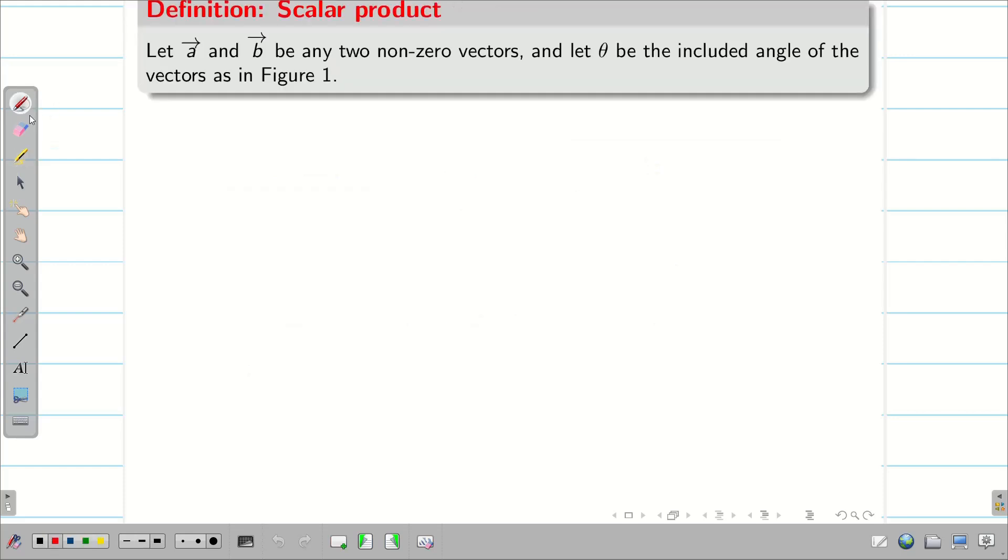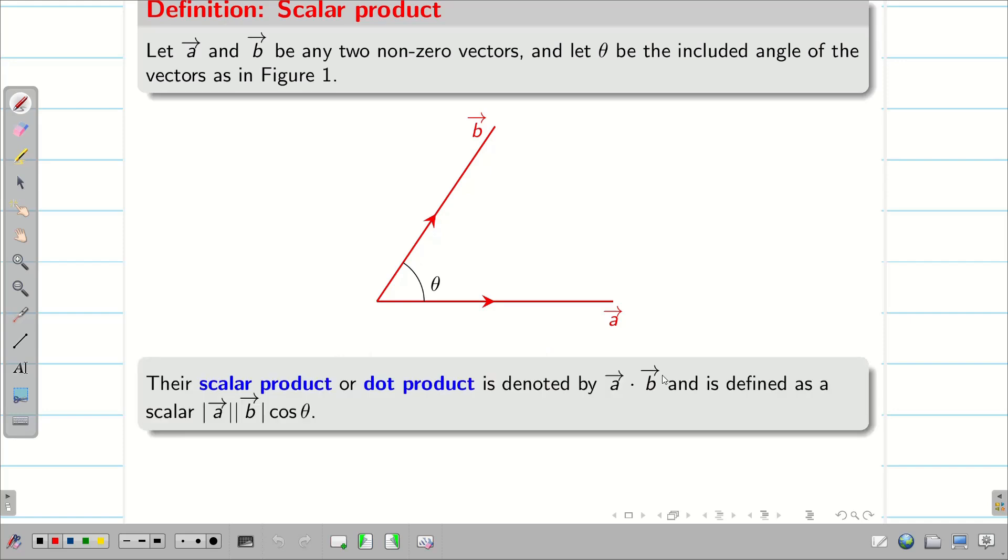In our school days, we saw two different kinds of products. One is dot product, the other one is cross product. The dot product is also known as scalar product. If we take two vectors a and b such that they are non-zero vectors, then angle between these two vectors is measured as theta. Then a dot b vector is going to be mod a into mod b cos theta. This is known as scalar product or dot product.